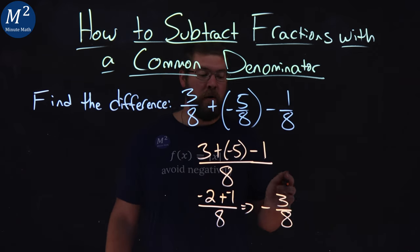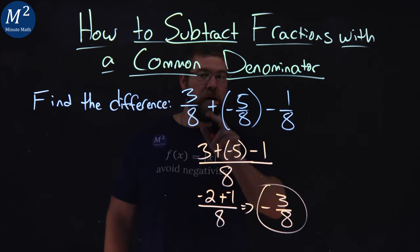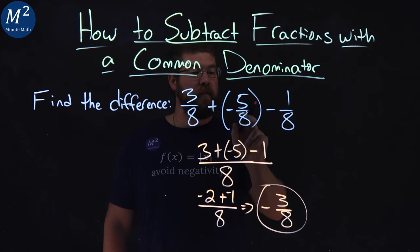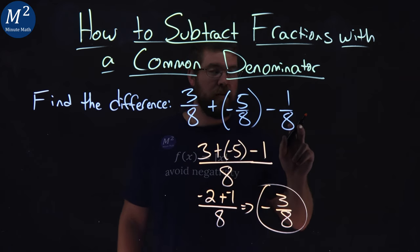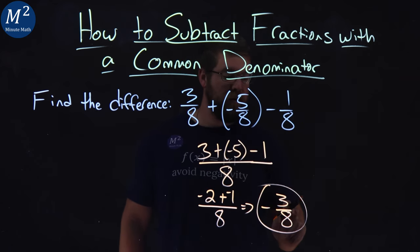This doesn't simplify anymore, and there we have it. 3 eighths plus a negative 5 eighths minus 1 eighth comes out to be negative 3 eighths.